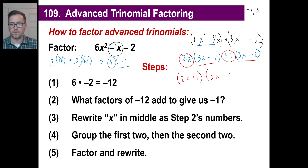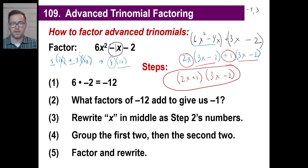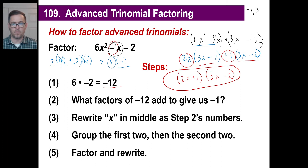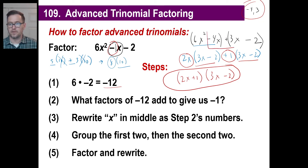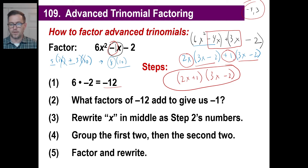Notice that both groups contain the same binomial, 3x minus 2. That means 3x minus 2 is being multiplied by both 2x and positive 1. There's no need to write it twice — we combine the outside terms as 2x plus 1, and write the common factor 3x minus 2 once. So the factored answer is (2x + 1)(3x − 2). That's it.